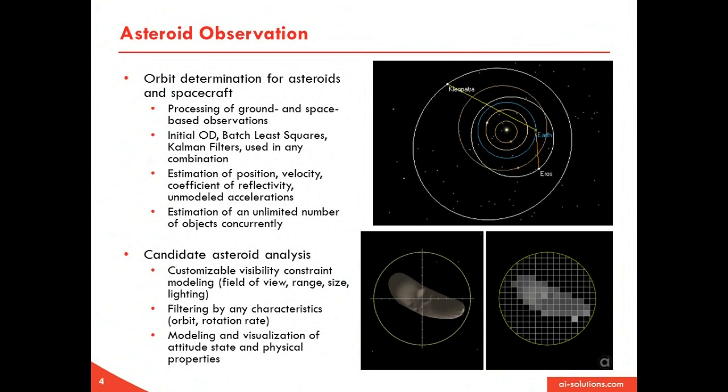Once the orbit has been estimated and you want to predict forward to when this object is going to be visible from different observation sites, you can do observation predictions from ground and space-based assets, and you can constrain those predicted contact times based on the field of view of your sensor, the range to the object, the size of the object, and the lighting conditions. You can implement any custom logic to filter objects down by orbit or rotation rate, and you can generate predicted views from any sensor.